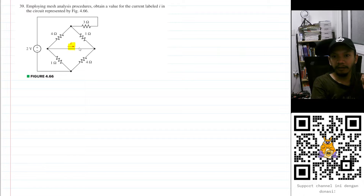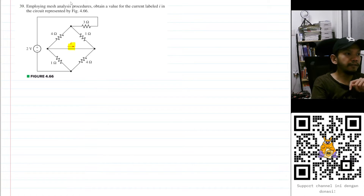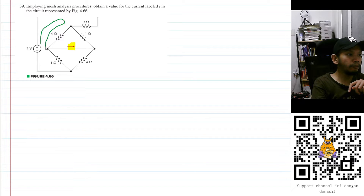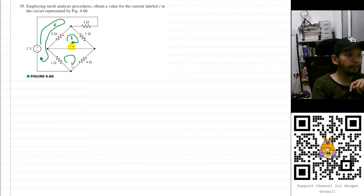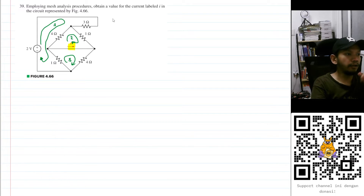Now let's draw the loops. The first loop is here — let's name this as loop number one. Then this loop here is loop number two, and this loop here is loop number three. Now let's do KVL at loop one.